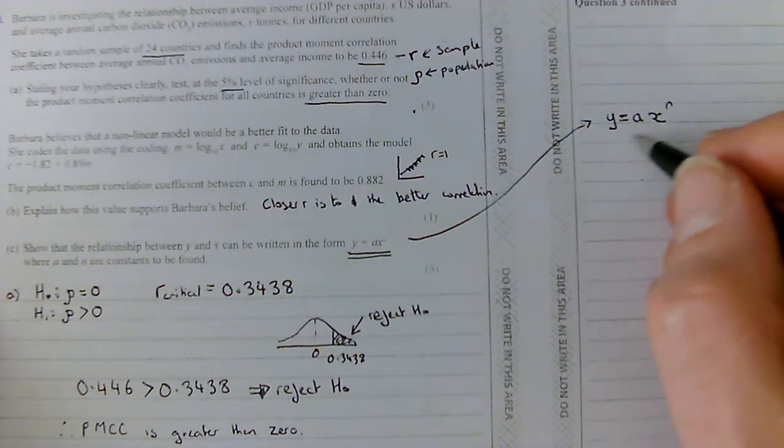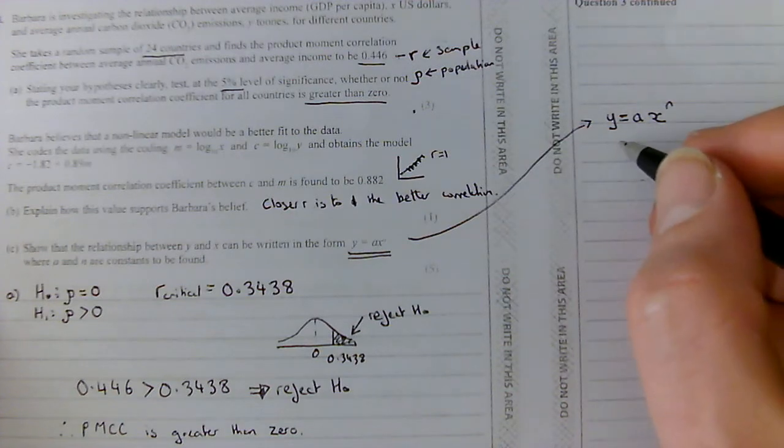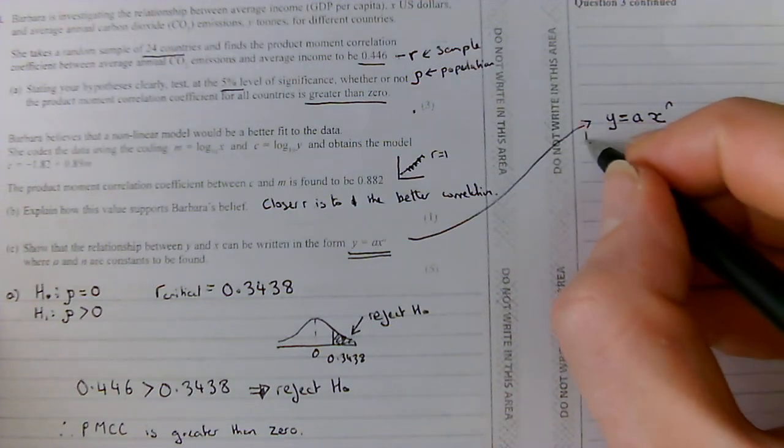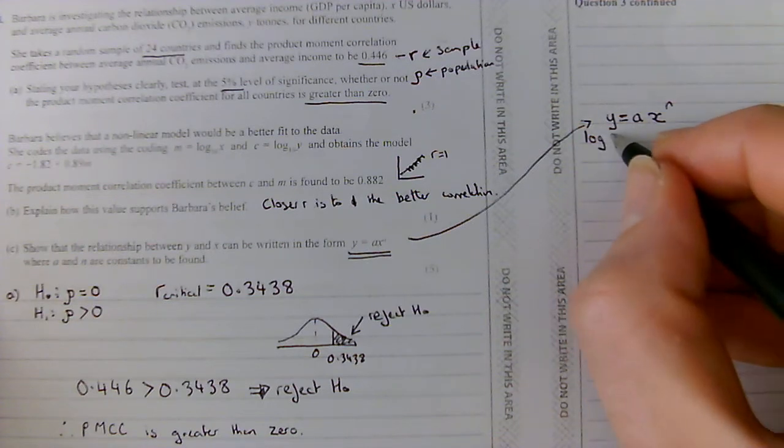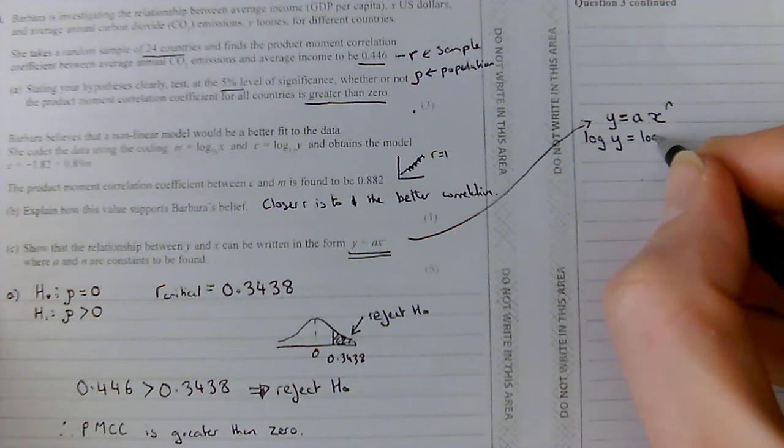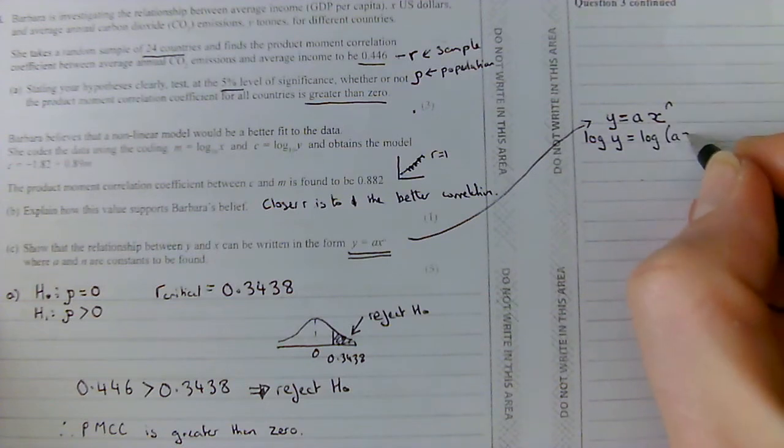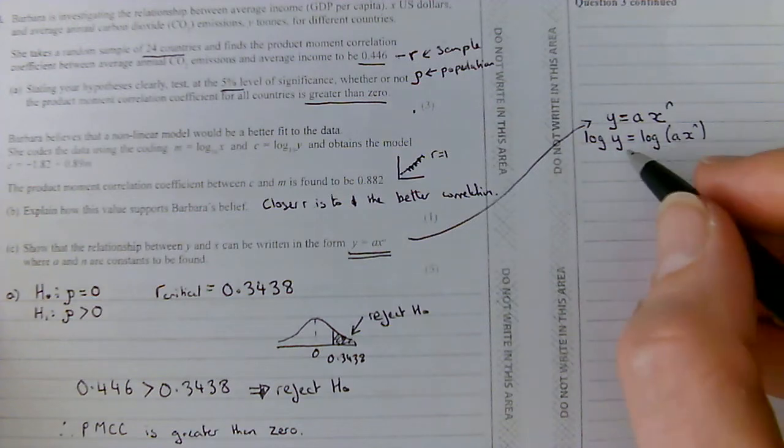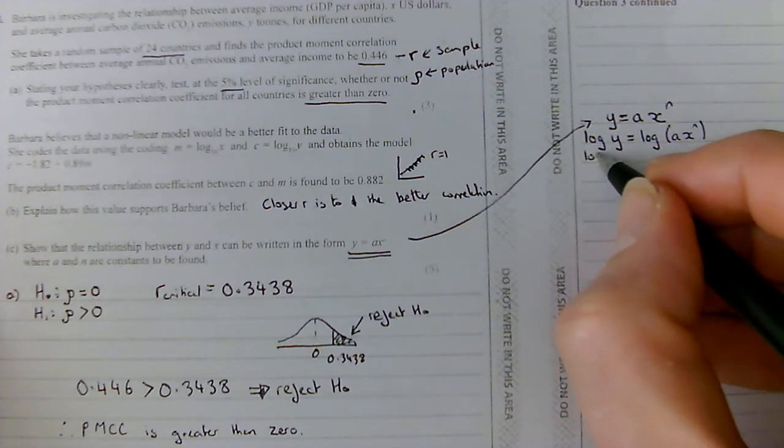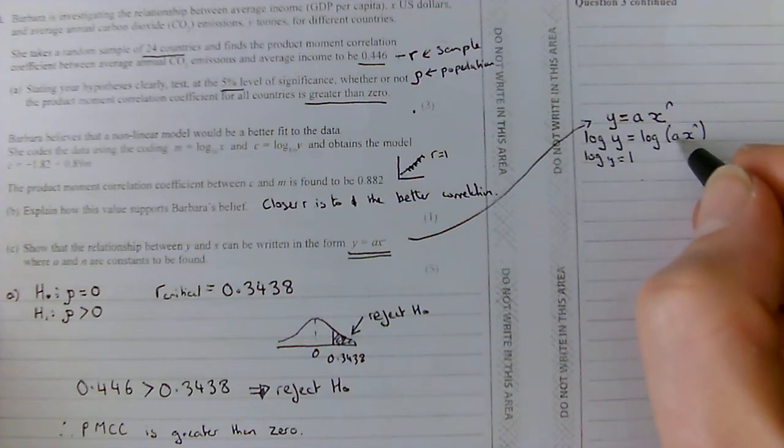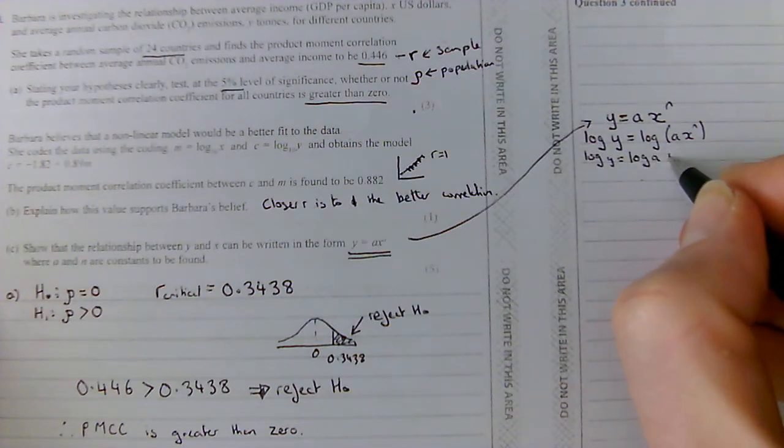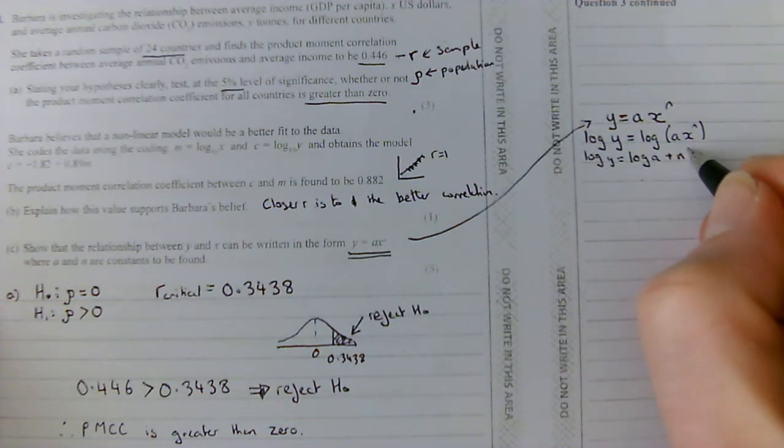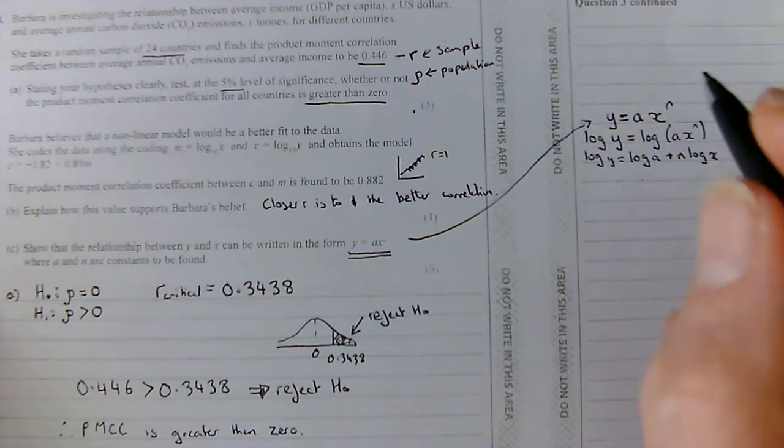So, we're going to say log, and we're going to do base tens. I'm not going to write that in. You don't need to. Log of y equals log of Ax to the n. Remember, you're taking logs of the whole side. We're then going to use our rule of logarithms. So, log of y equals log of A times B is log A plus log B. So, log A plus n log x.